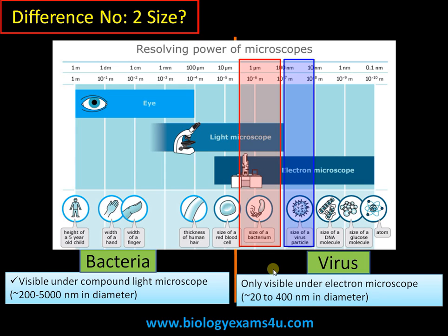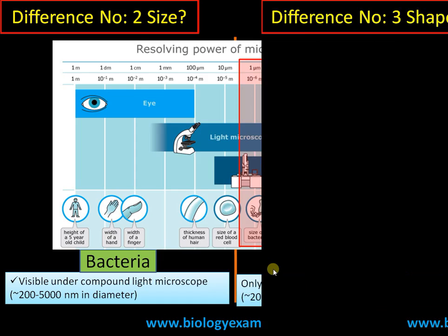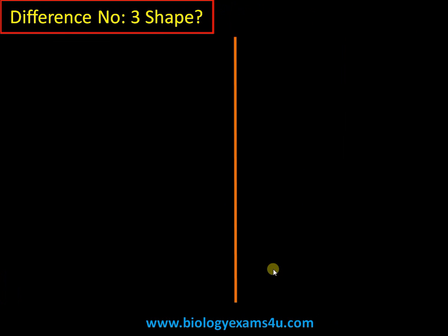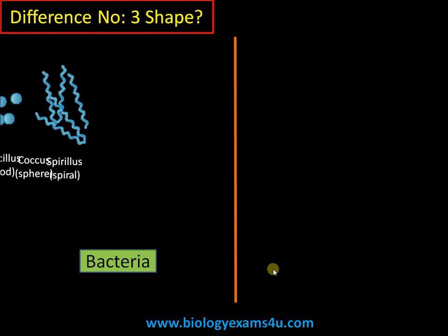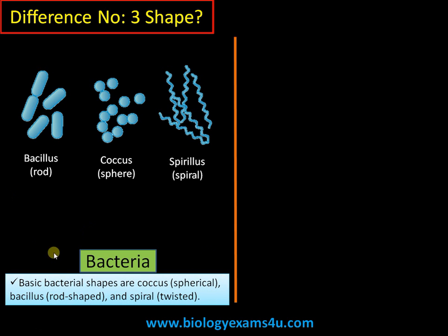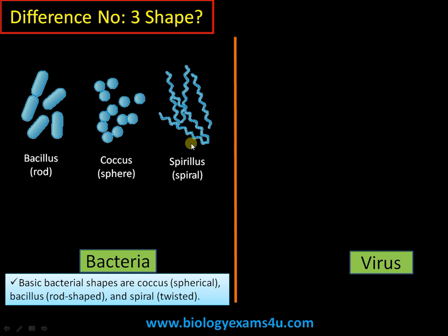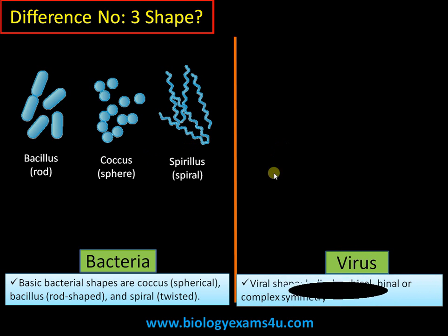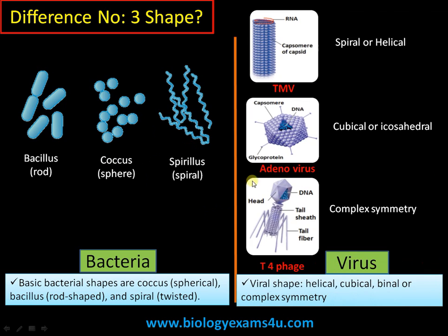Difference number three is regarding shape. Bacteria exist in different forms. The most common forms are: coccus — round or spherical shaped; bacillus — rod shaped, with a common example being the curd bacteria Lactobacillus; and spirillus — twisted or spiral shaped.